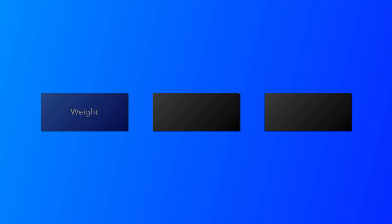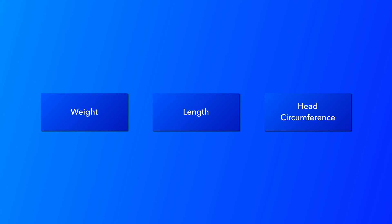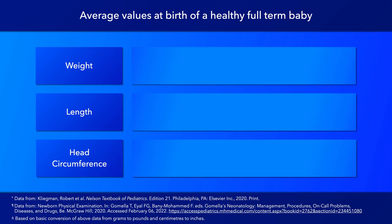Three core elements of anthropometry are measured in all newborns: birth weight, length, and head circumference. These values are important for the clinical assessment of a newborn and for monitoring the infant's nutritional status as they grow. Before we go into the more technical part of this video, I'll first present simplified data from popular textbooks of pediatrics and neonatology.